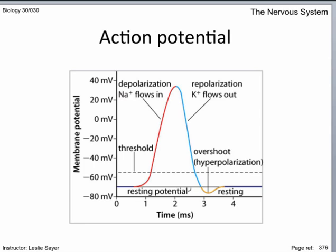Introducing new terms: depolarization, action potential, threshold potential. Depolarization occurs when the resting potential changes to a lesser amount. At around negative 55 millivolts, the cell membrane at the node of Ranvier changes — this change is called an action potential, a wave of depolarization that sweeps along the neuron. This action potential is caused in response to an action potential occurring at an adjacent node. This is an all-or-none response.